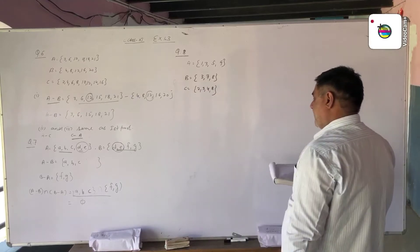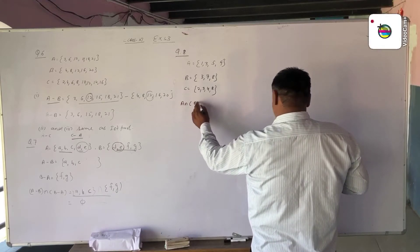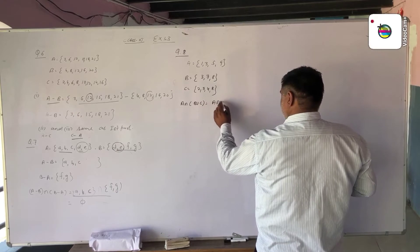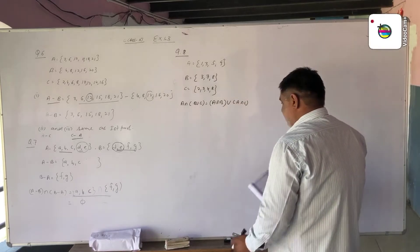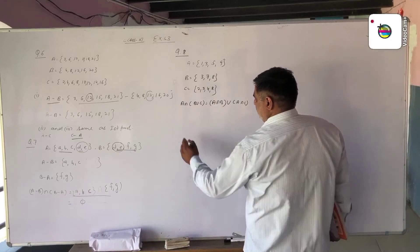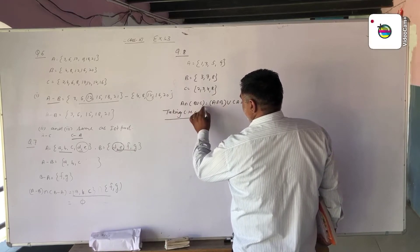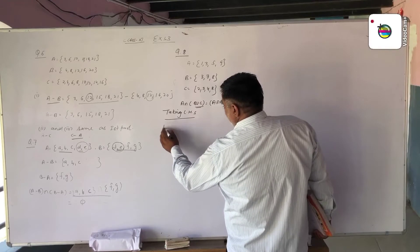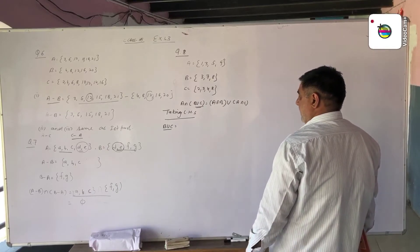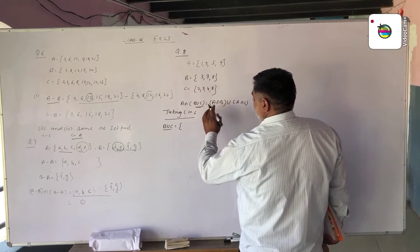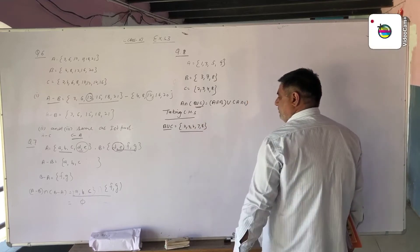We verify that A intersection (B union C) equals (A intersection B) union (A intersection C). We take left hand side first. In LHS, we find B union C. We take those elements which are in B and C, counting common elements only once. So B union C is 2, 3, 4, 7, 8.